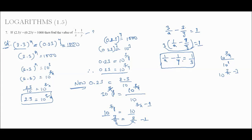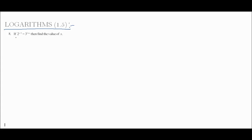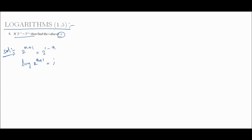Now the 8th problem: 2 to the power (x plus 1) equals 3 to the power (1 minus x). We need to find the value of x. Solution: we take log on both sides. Log of 2 to the power (x plus 1) equals log of 3 to the power (1 minus x).